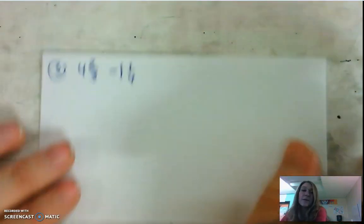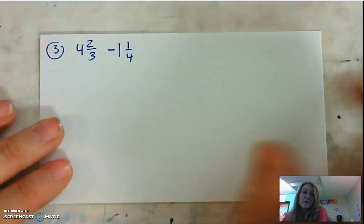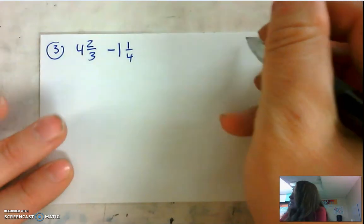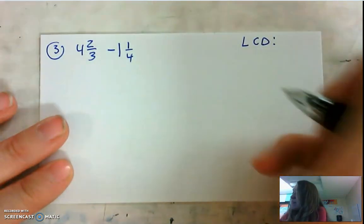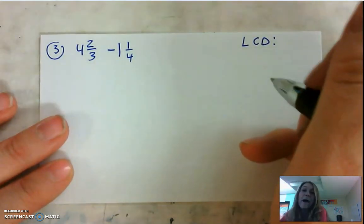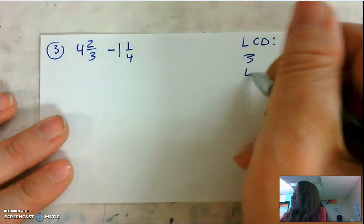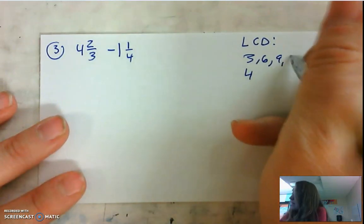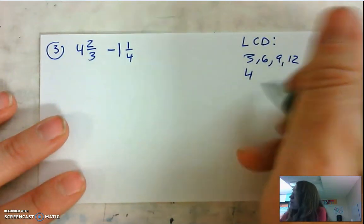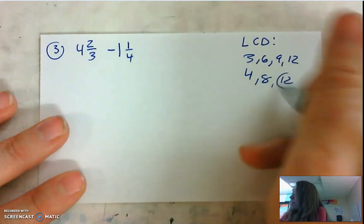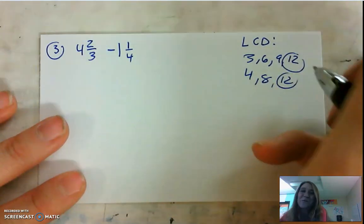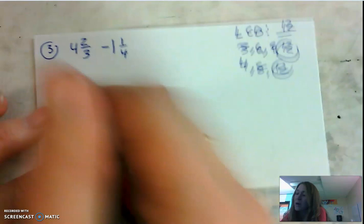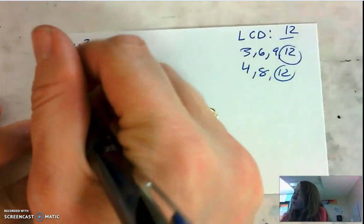Moving on now to number 3. It is a subtraction problem with mixed numbers, so I do need to find that LCD. I'm finding the LCD of 3 and 4, so I find the multiples: 3, 6, 9, 12 and 4, 8, 12 — stop. We've done it once, so you should have known that the LCD is 12.